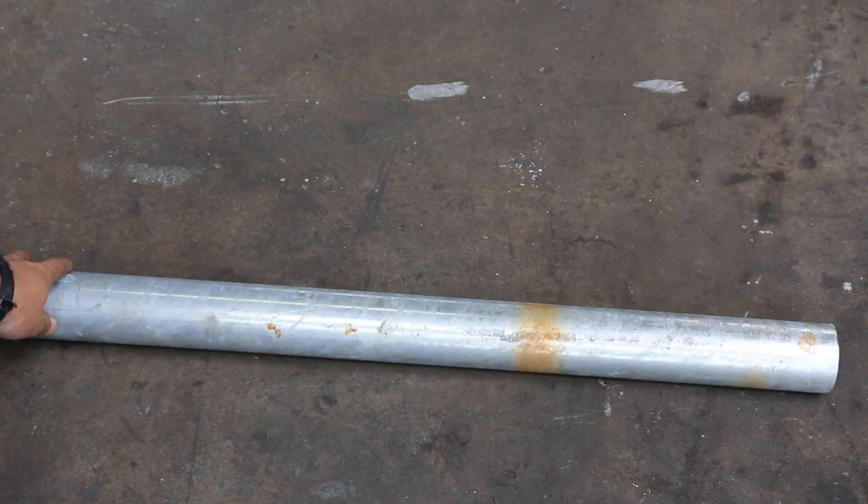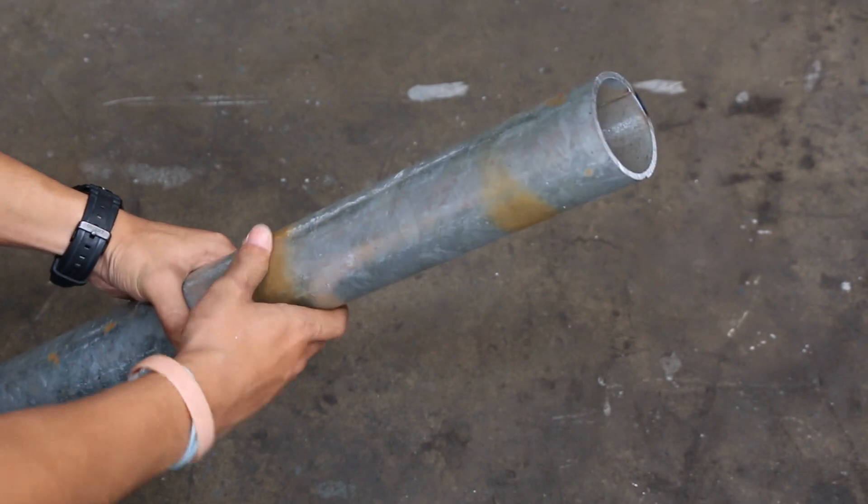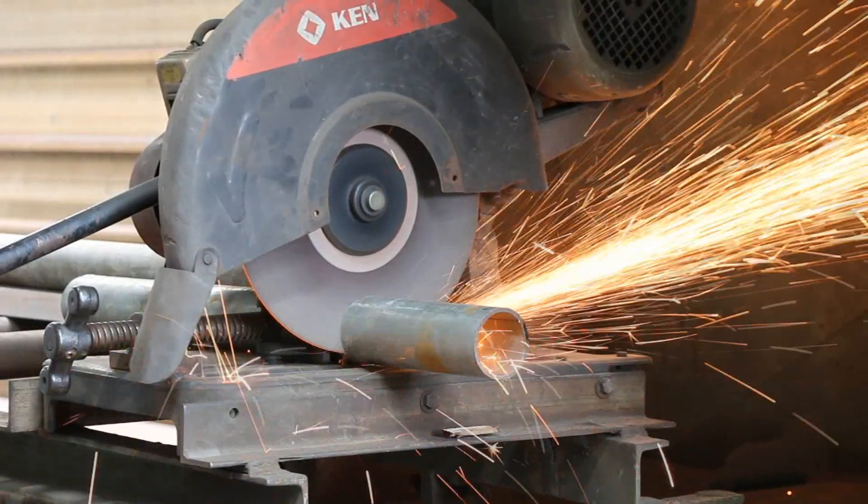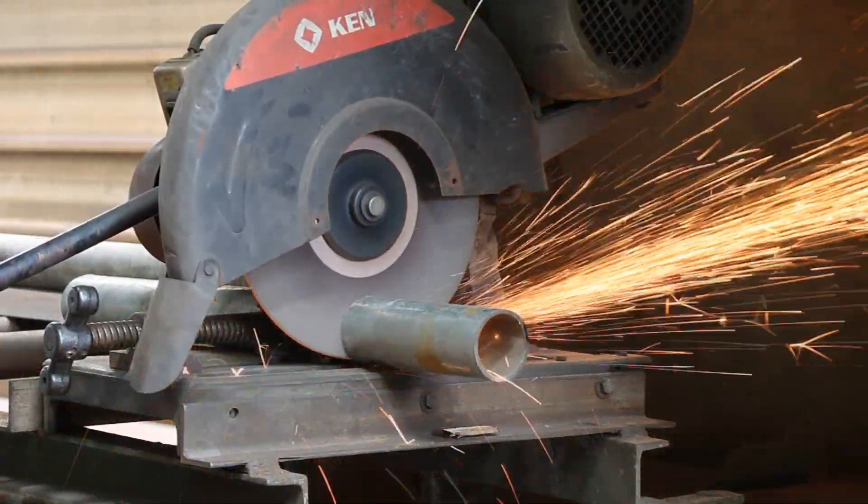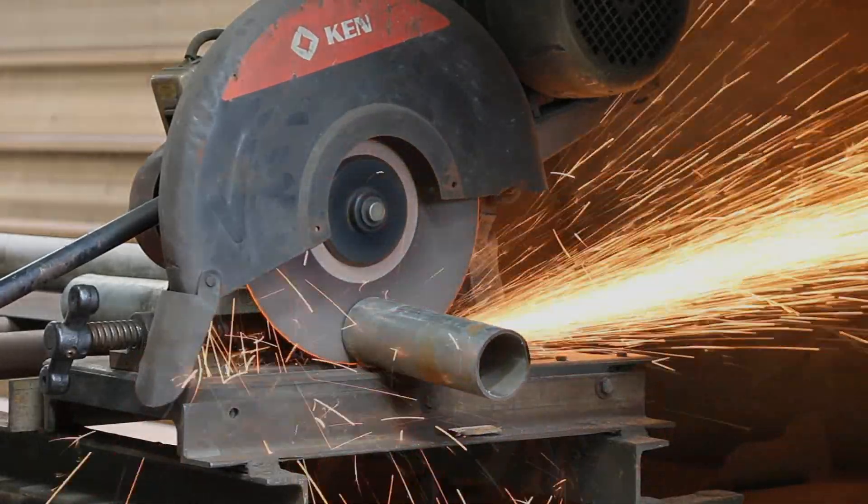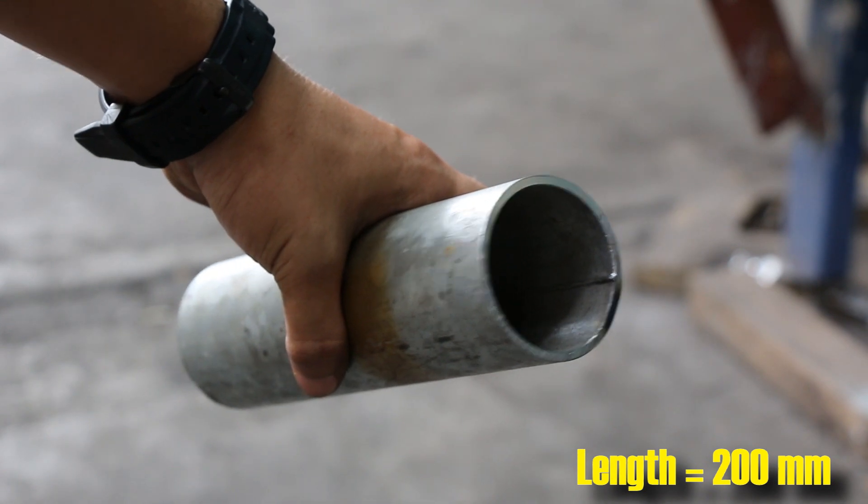The steel pipe was originally around 2 feet long but all I need was only 200mm. So I have to cut the pipe using the cut-off abrasive saw. And this is the steel pipe with a length of 200mm.